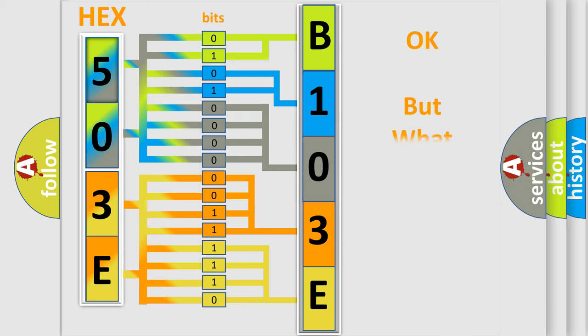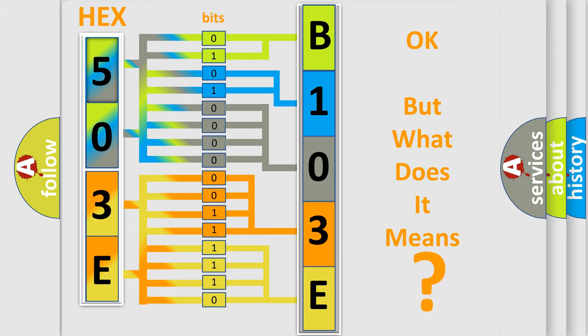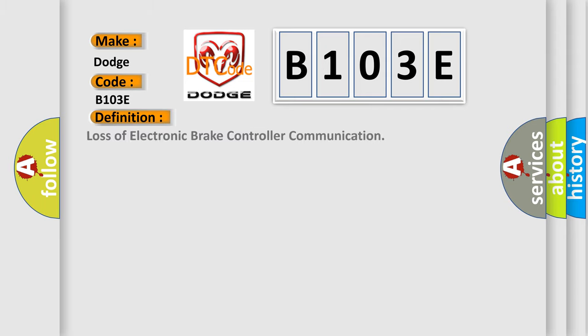We now know in what way the diagnostic tool translates the received information into a more comprehensible format. The number itself does not make sense to us if we cannot assign information about what it actually expresses. So, what does the diagnostic trouble code B103E interpret specifically for Dodge car manufacturers? The basic definition is: Loss of electronic brake controller communication.